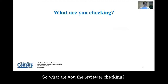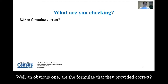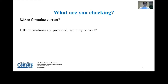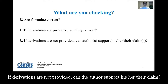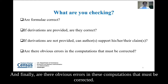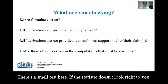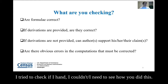So what are you, the reviewer, checking? An obvious one: are the formulae that they provided correct? If they provided derivations, are they correct? If derivations are not provided, can the author support their claims? And finally, are there obvious errors in these computations that must be corrected? There's a smell test here — if the statistic doesn't look right to you, you can say this doesn't look right to me. I tried to check it by hand and couldn't.